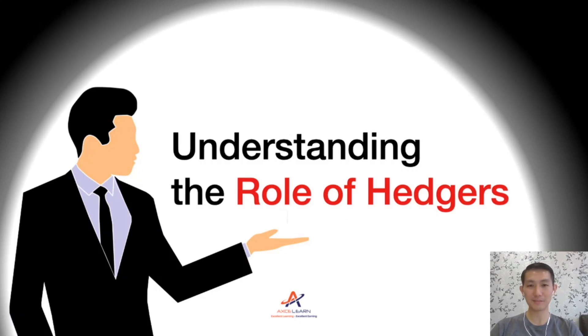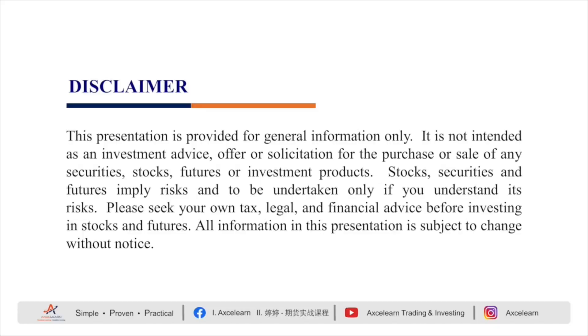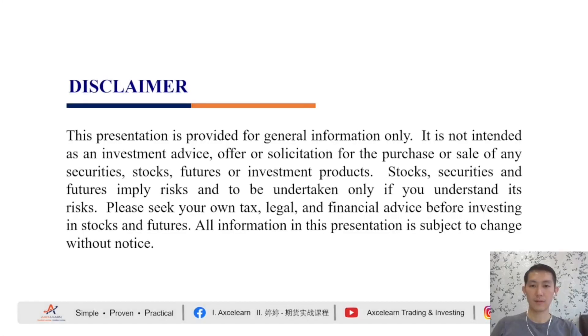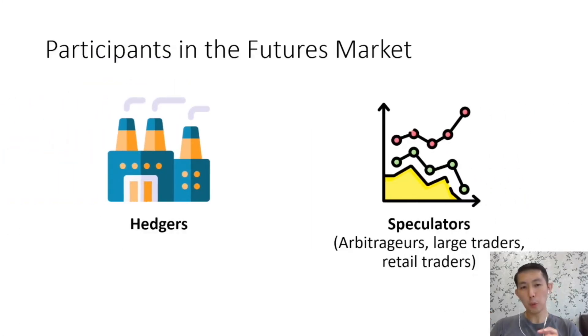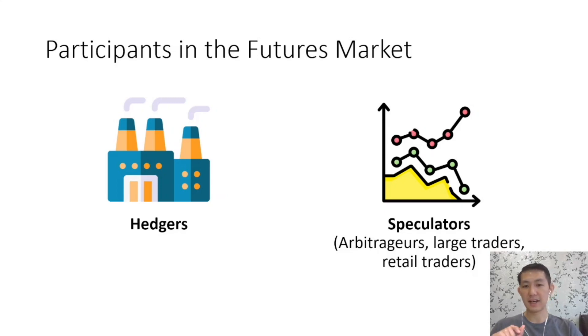So, let's get started. Generally, there are two main categories of participants in the futures market. There are hedgers and speculators.